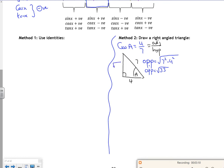I can now work out what sine A is because sine is opposite over the hypotenuse, and what tan A is because that's opposite over adjacent. So sine A is root 33 over 7, and tan A is root 33 over 4.